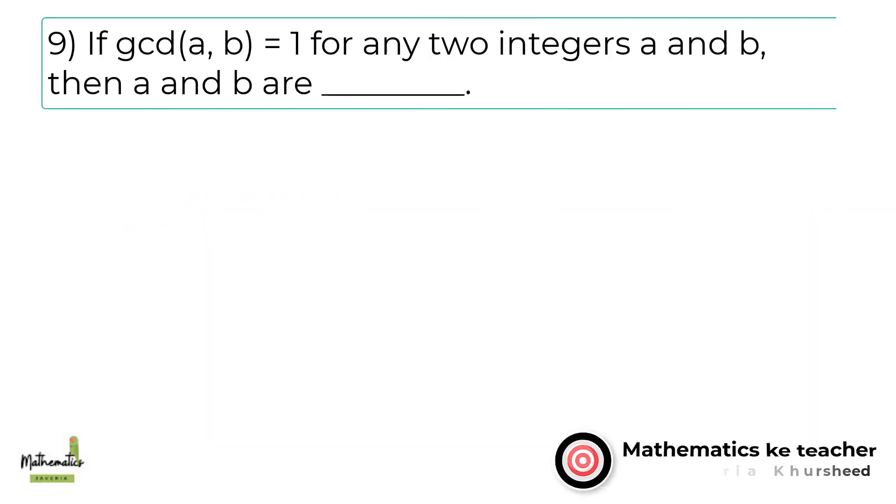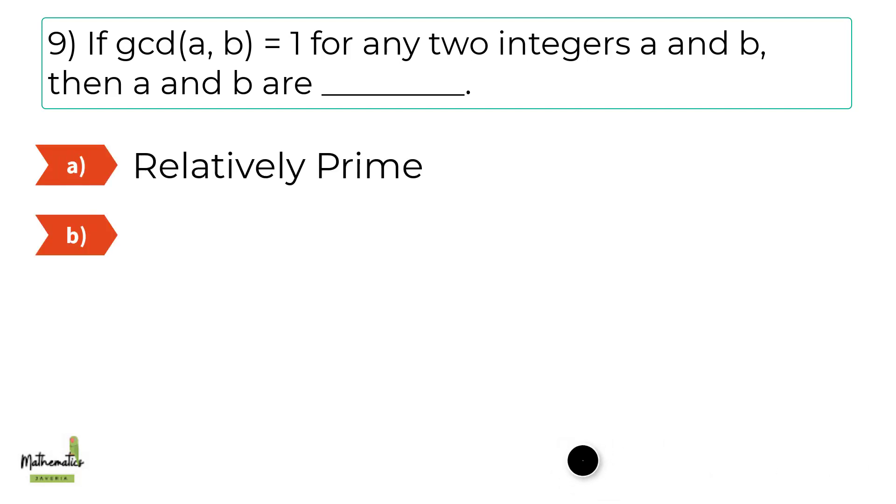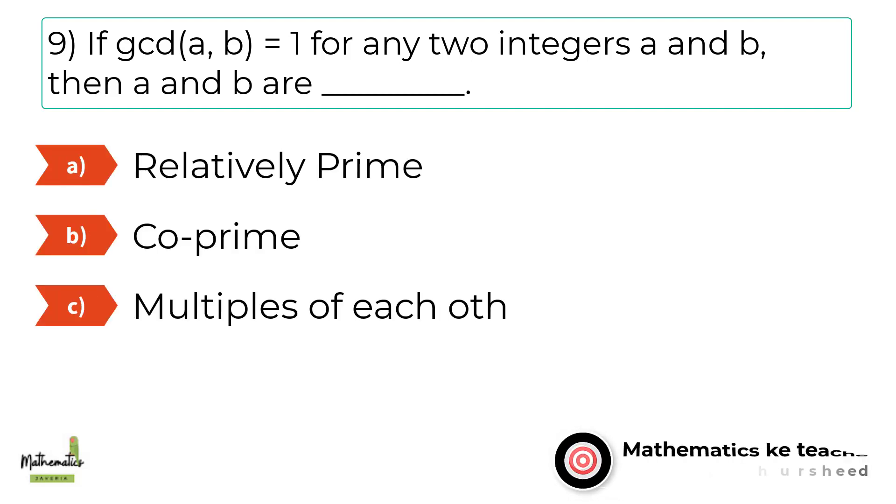Number 9. If GCD of A, B equals 1 for any two integers A and B, then A and B are A, relatively prime. B, co-prime. C, multiples of each other. D, both A and B.